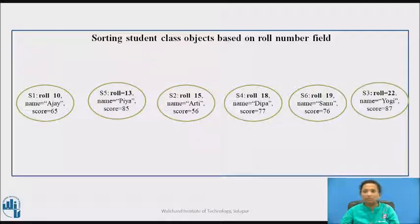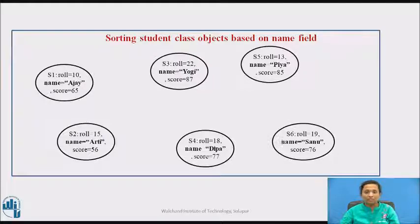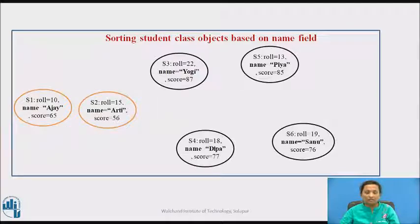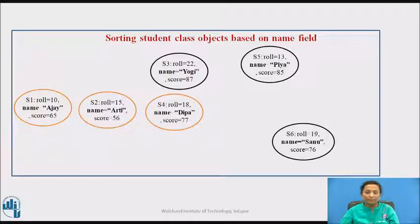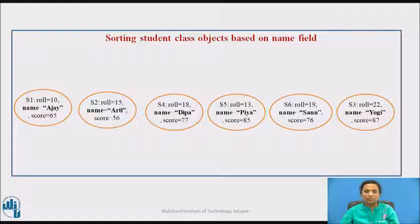This way we have sorted the list of student objects based on the roll number field. Now if we want to sort this same set of student class objects based on the name field instead of roll number, alphabetically the order would be: first Ajay, then Arati, then Tipa, then Pia, then Sanu, and then Yogi. So now the student objects are sorted based on the name field. We can sort the same set of objects based on different attributes from the same class.